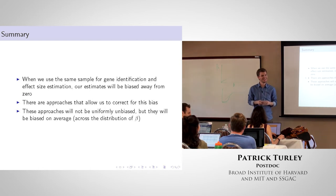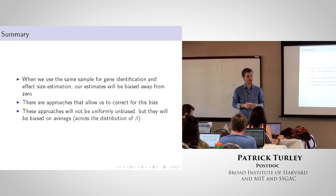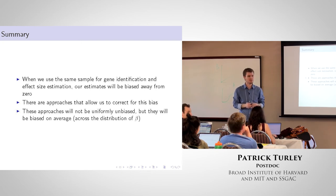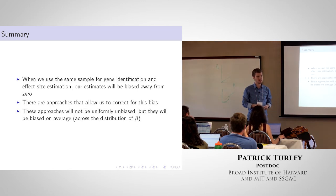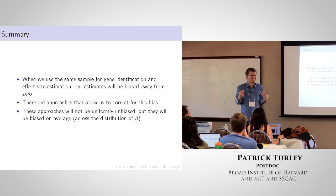Winner's curse corrections are also relevant for polygenic scores. When creating scores, tools like LDPRED effectively perform the same type of correction. The corrections are also useful when testing for stratification using within-family samples — you need a guess of the true effect size to calculate power for that kind of test, which requires correcting the discovery estimates.